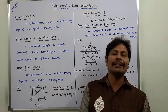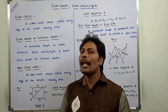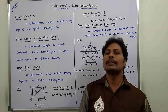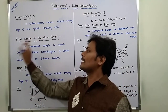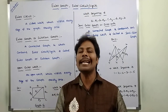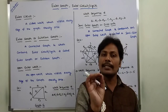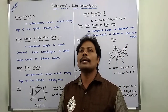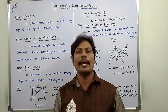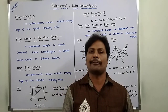By satisfying these two conditions, the given graph contains an Euler circuit or cycle. A connected graph G that contains an Euler circuit or cycle is called an Euler graph or Eulerian graph.